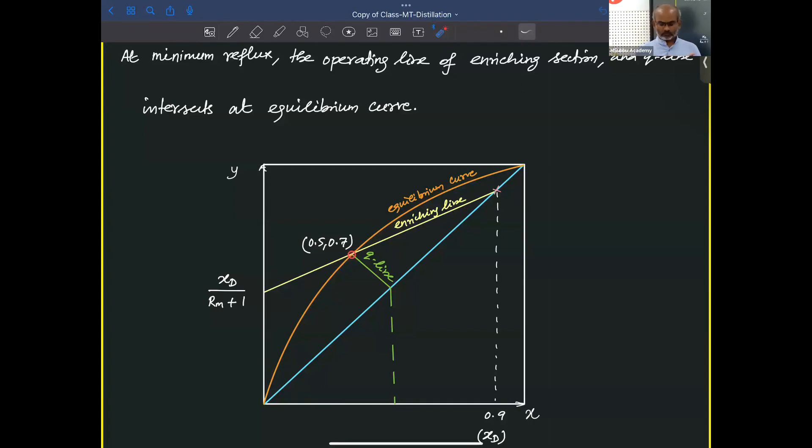And for the minimum reflux, what we do is connect the point of XD passing through this equilibrium curve. The Q line and enriching line are meeting at the equilibrium curve itself for the case of minimum reflux.